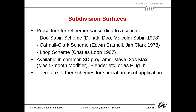There are several subdivision algorithms. The Doo-Sabin scheme by Donald Doo and Malcolm Sabin from 1978. Then the Catmull-Clark scheme by Edwin Catmull and Jim Clark, also from 1978. And the Loop scheme by Charles Loop from 1987. These are available in common 3D programs like Maya, 3ds Max, or the open-source Blender, or as plugins. There are also further schemes for special areas of application.